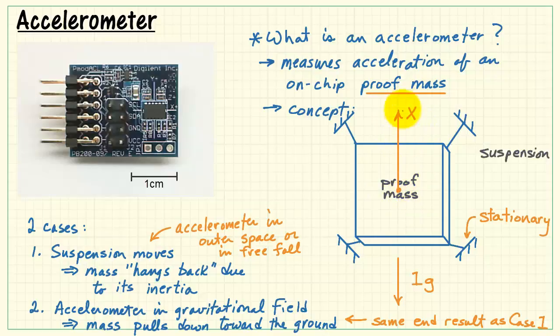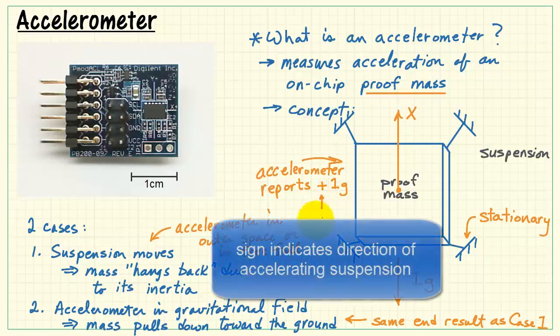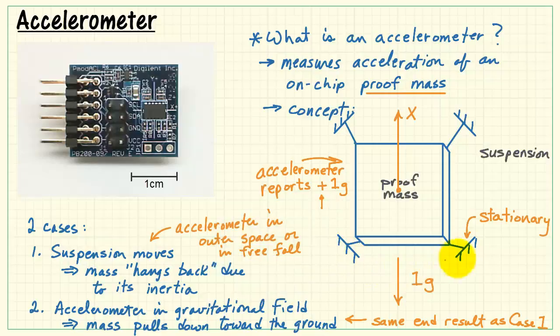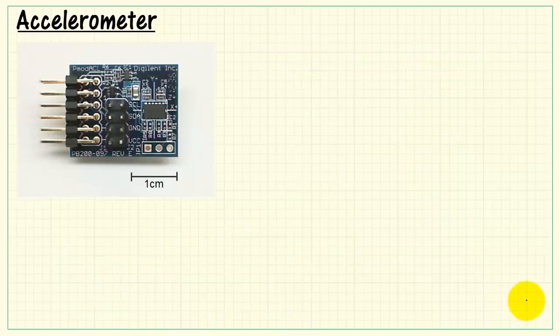I'm going to define the direction of positive acceleration going up. And in this case, the accelerometer would report a plus 1g acceleration. The sign indicates the direction of the accelerating suspension. And this is based on what I was calling case number one. However, if the suspension is stationary, that's case two, and you can't tell the difference. It's still reported as plus 1g.